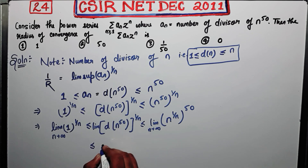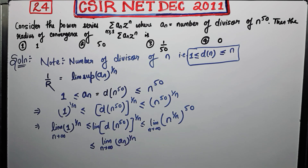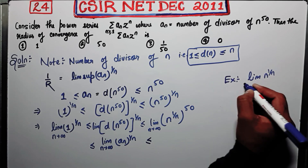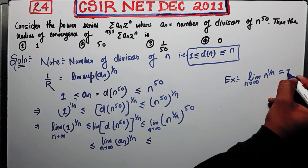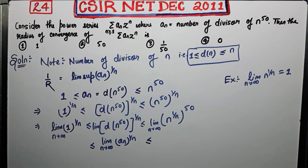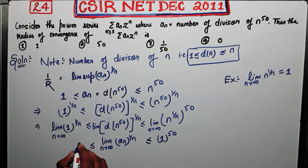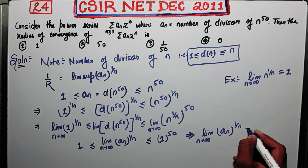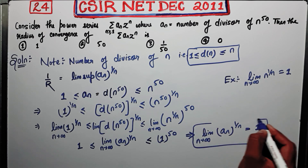So the limit as n → ∞ of a_n^(1/n) — where a_n = d(n)^50 — is sandwiched between 1^(1/n) and n^(50/n). As a homework exercise, you can prove that lim_{n→∞} n^(1/n) = 1, so n^(50/n) = (n^(1/n))^50 → 1^50 = 1. Therefore, by the sandwich theorem, lim_{n→∞} a_n^(1/n) = 1.